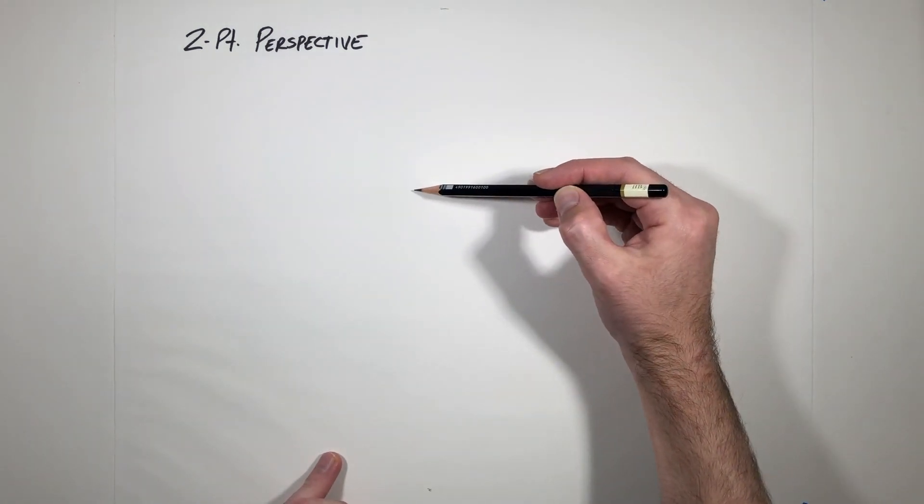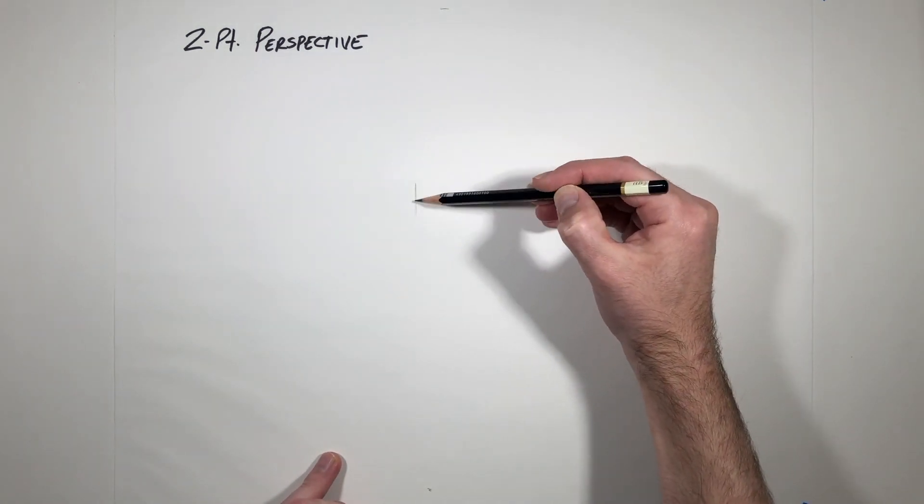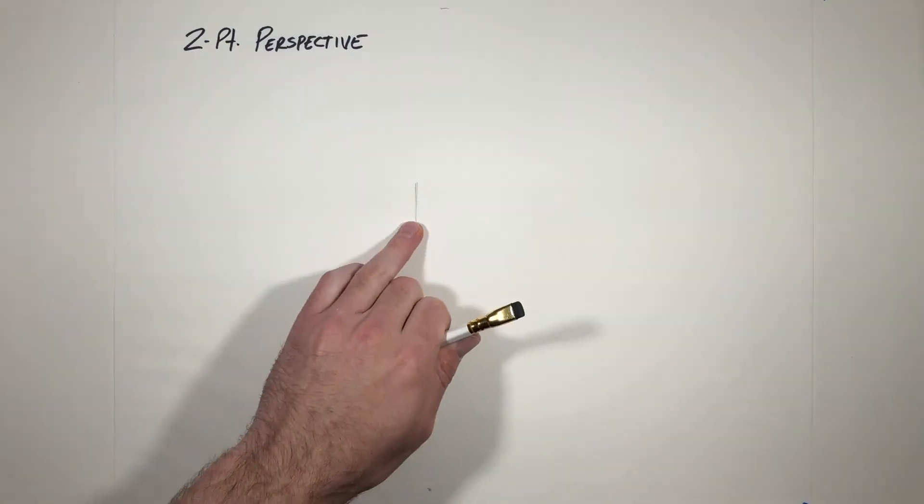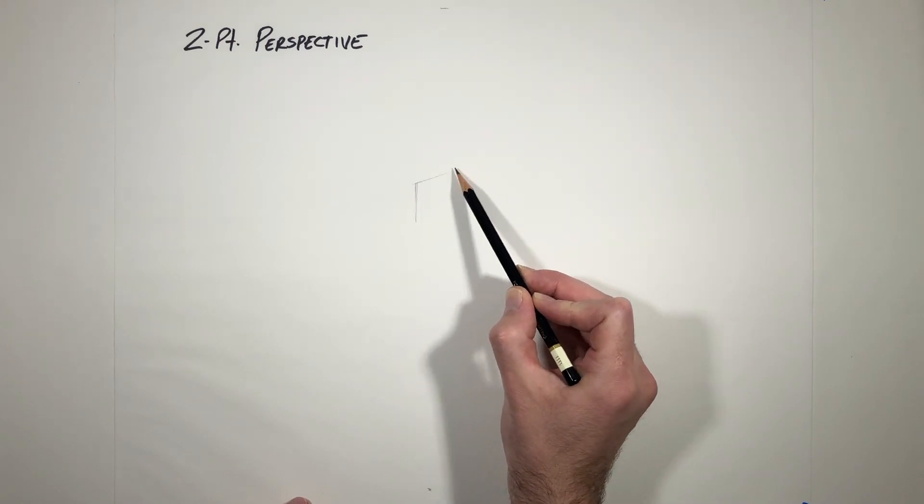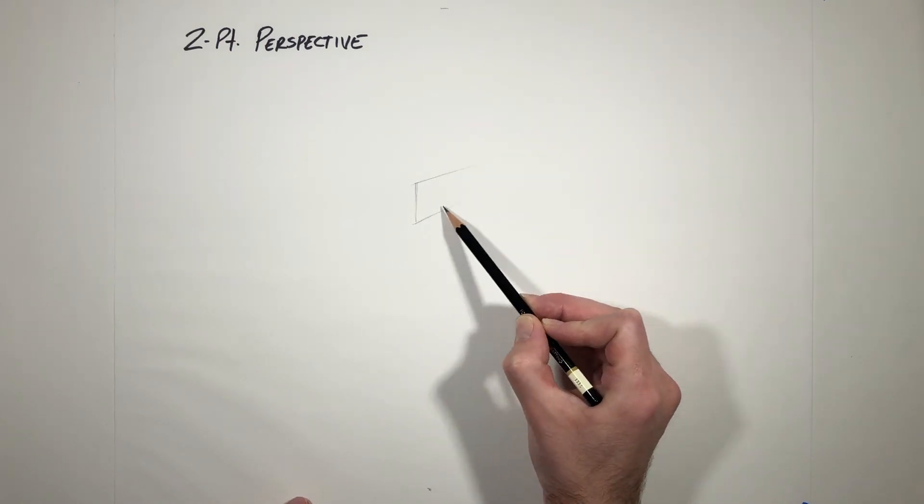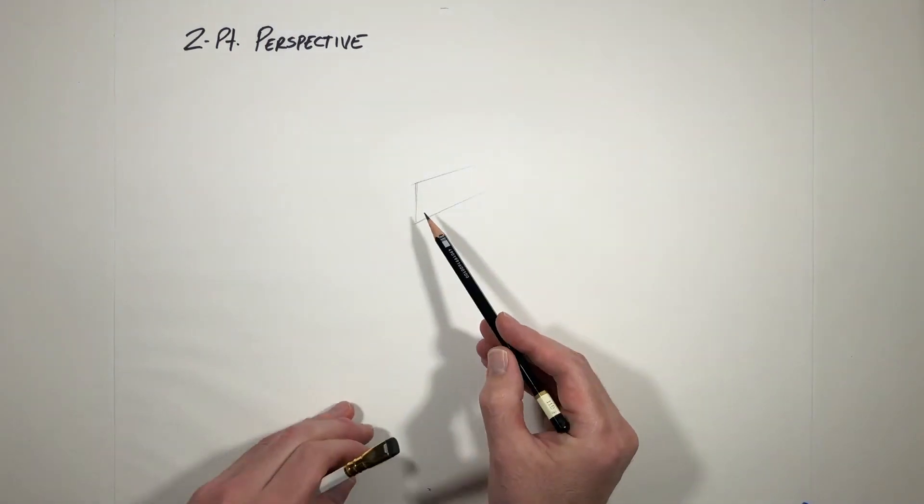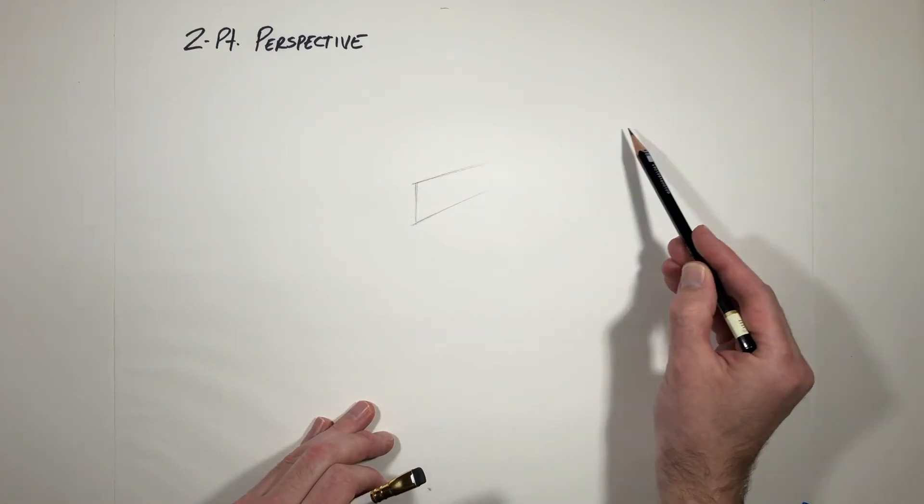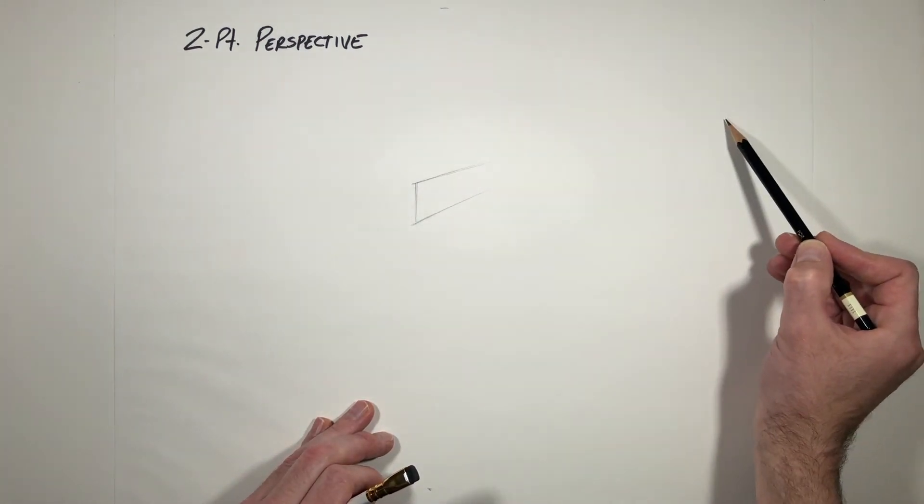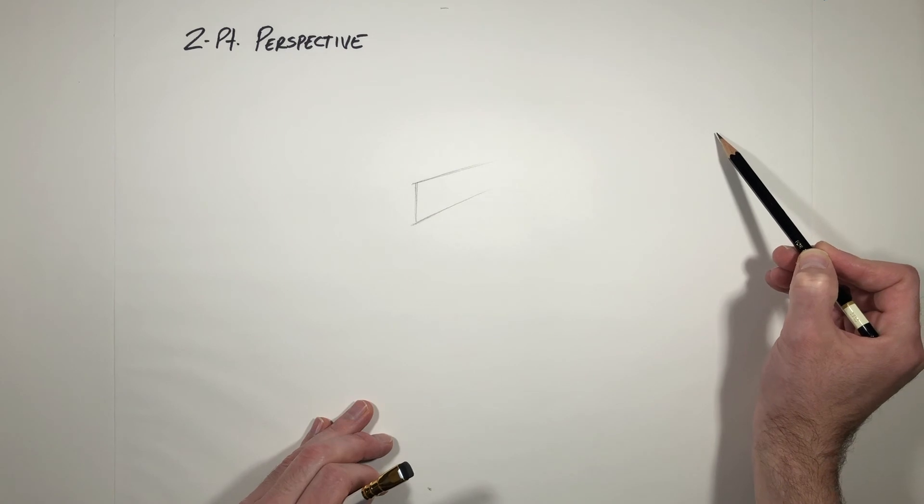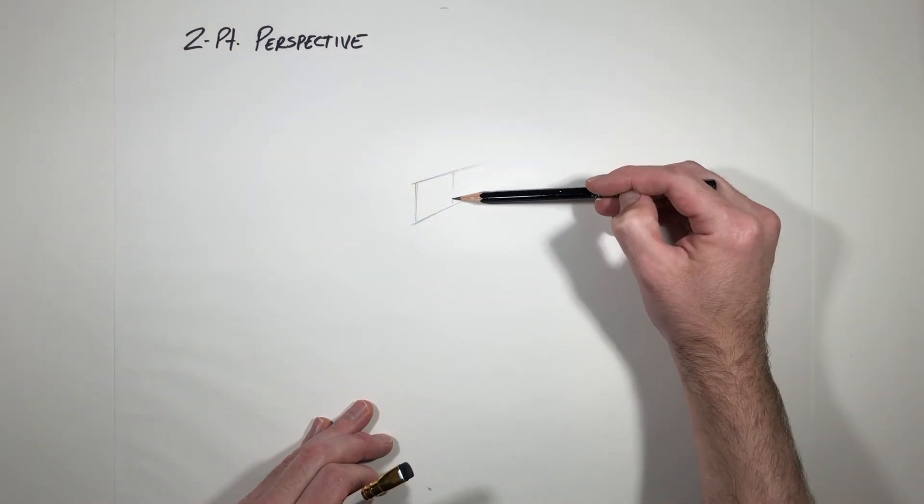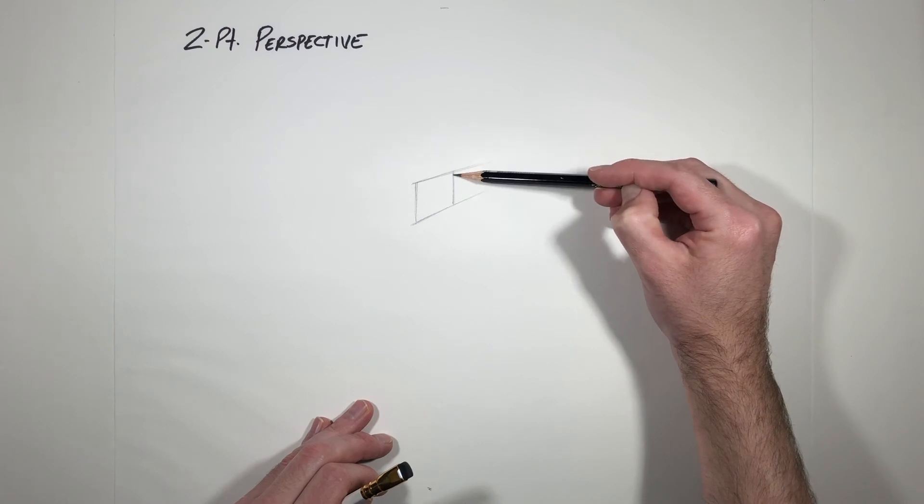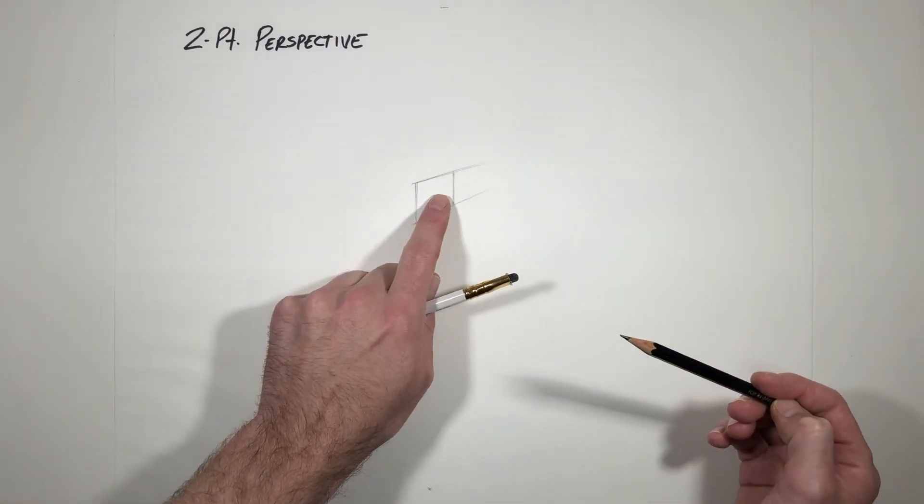So some cubes in two-point. Let's start with just a simple cube. We can do the same thing we did when drawing with perspective lines and start on a corner. Let's draw the right side of a cube here. This is going to be my right side zooming off. These two lines should be zooming to some point in the distance out this way. Now I don't have to draw where that point is. I just need to know that they're kind of going closer and closer together.